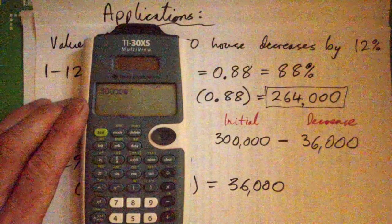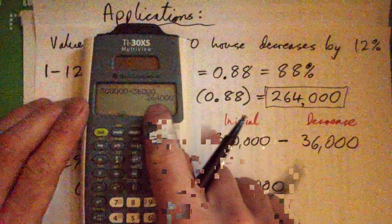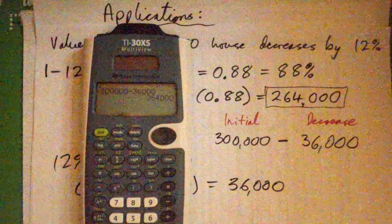We could have done all that. And then we could have gone, okay. Take our initial amount. 300,000. Subtract 36,000. To get 264,000. Same thing, right? Right.